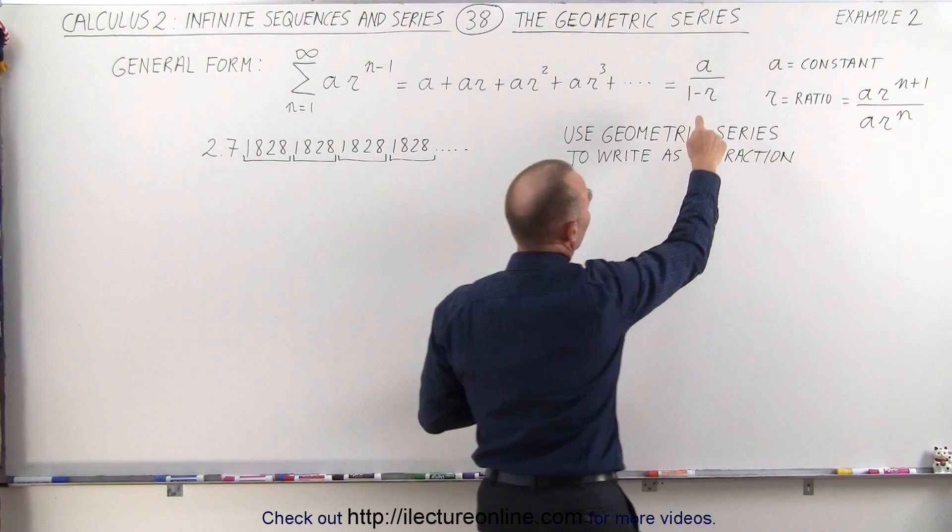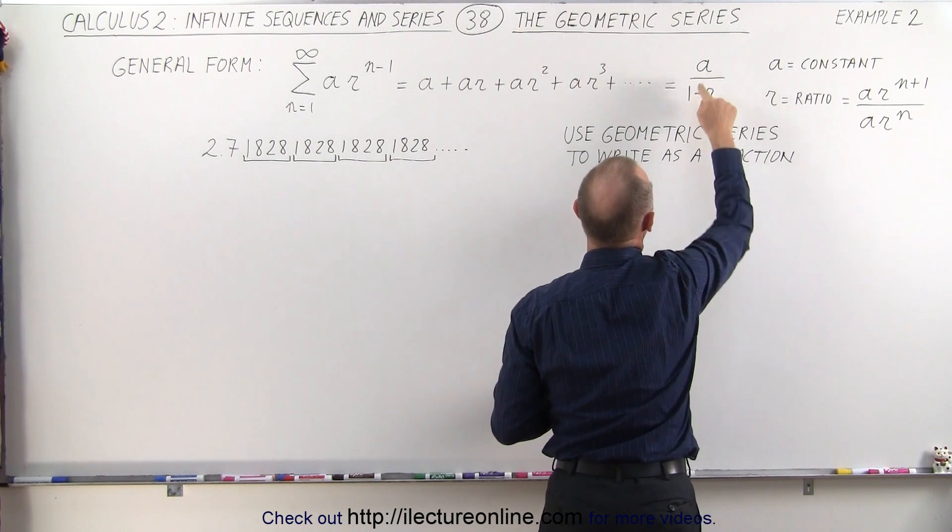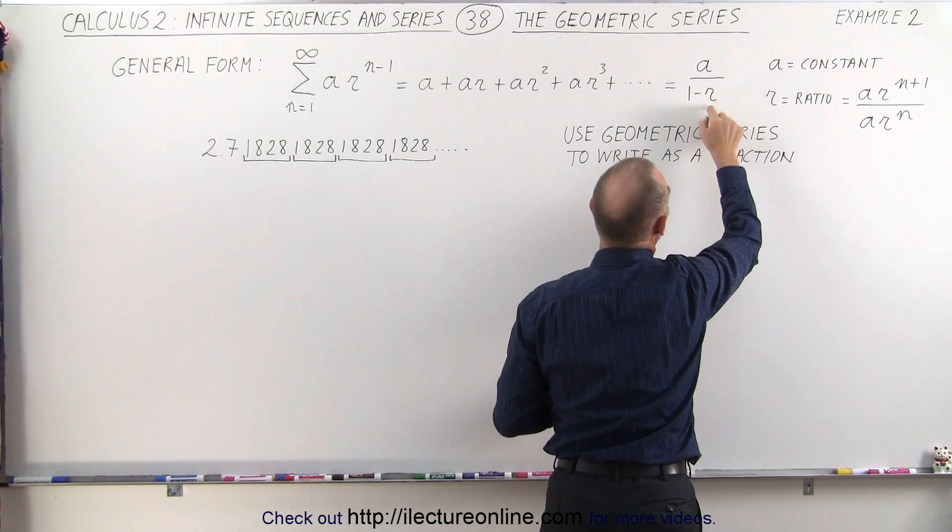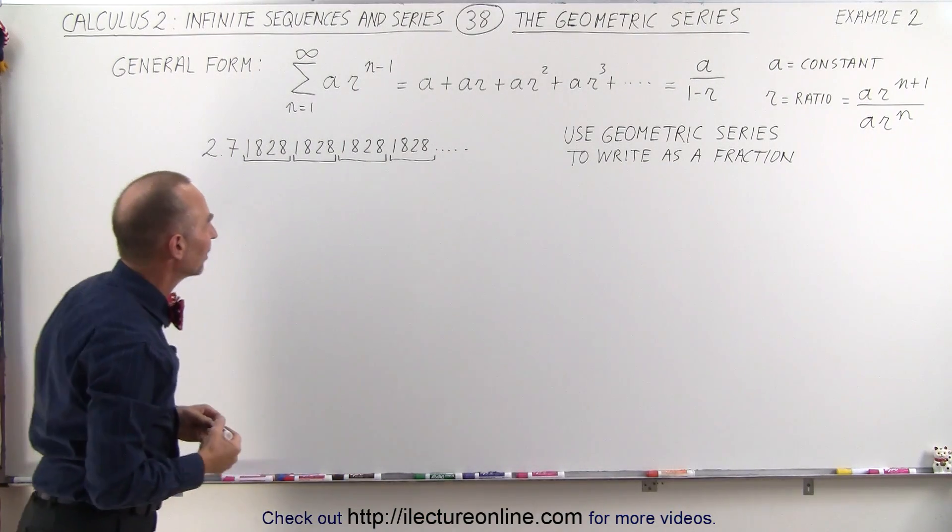We know that the sum of geometric series is a divided by 1 minus r, a being the constant, and r being the ratio of two consecutive terms in the series.